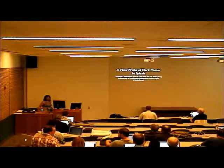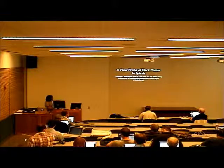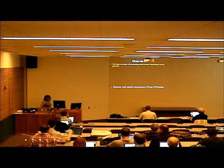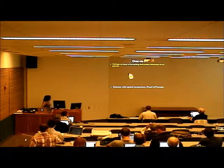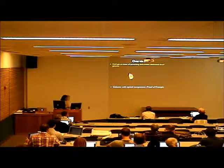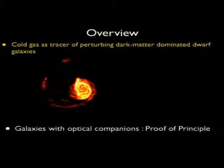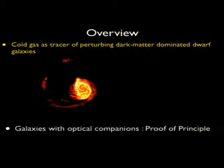I'm going to talk about some recent work that we've done on developing a new probe of dark matter in spiral galaxies. The idea is to analyze disturbances in the outer H1 disks of spirals, such as in this H1 map of M51. By analyzing these structures, we can quantitatively characterize dark matter dominated dwarf galaxies — specifically, how massive they are and where they are in radius and azimuth.